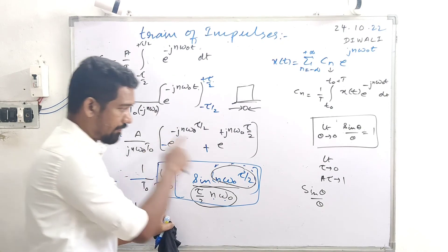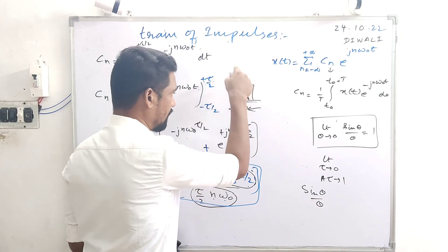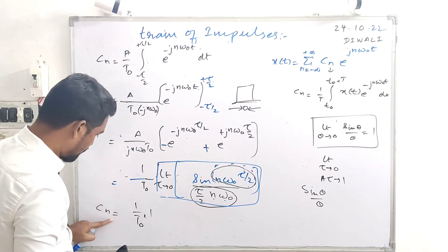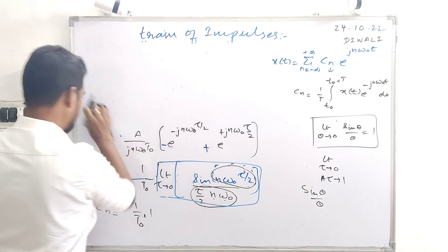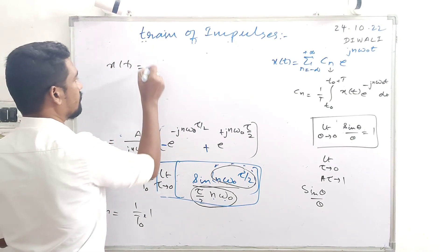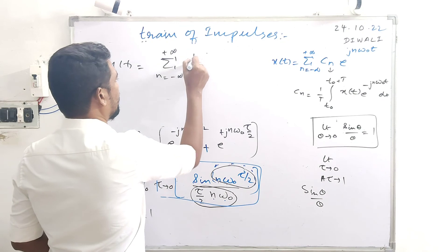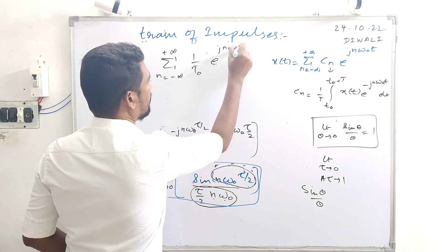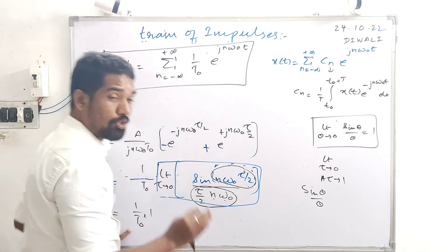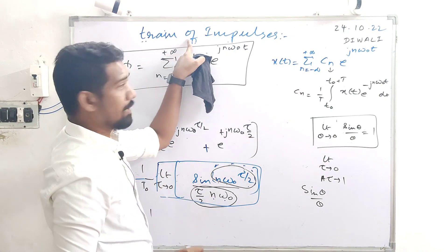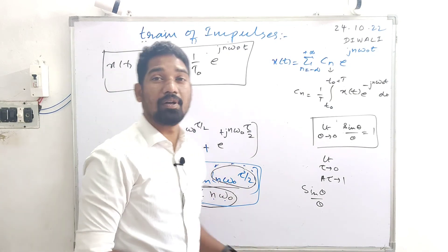So this is the Fourier series coefficient for a train of impulses: cₙ = 1/T₀. The final expression for the exponential Fourier series representation of a train of impulses is X(t) = Σ (1/T₀) e^(jnω₀t), summed from n = -∞ to +∞. Thanks for watching.